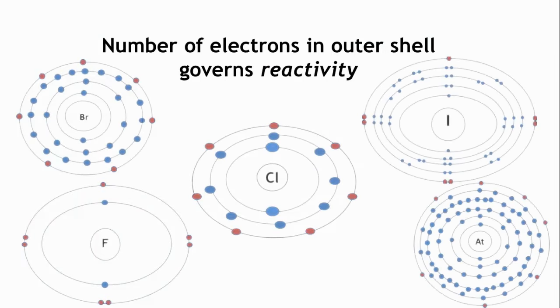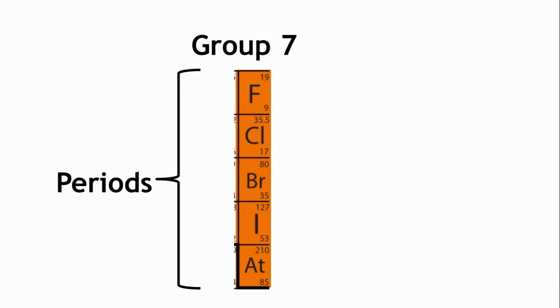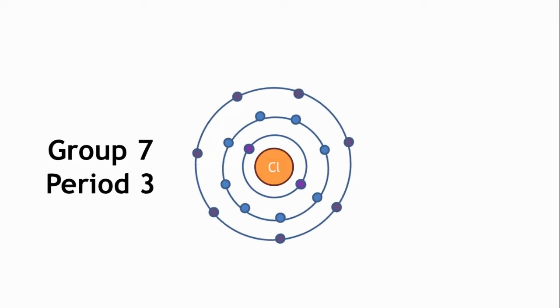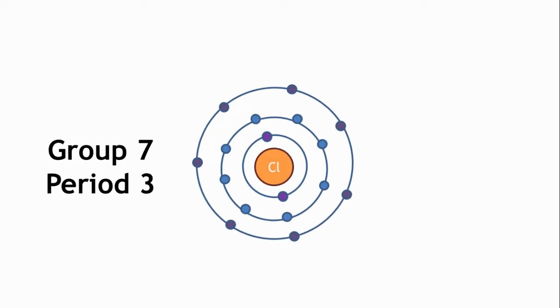The properties show a gradual change going down the group, as we go from period to period. So if we look at group 7 again, we can see that they are each in a different period in the periodic table, telling us that each element in this group has its outer electrons on a different shell. So chlorine is in group 7, period 3. Therefore, it has three energy levels with seven electrons in its outermost shell.